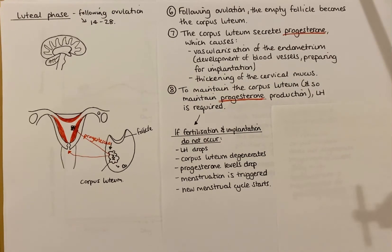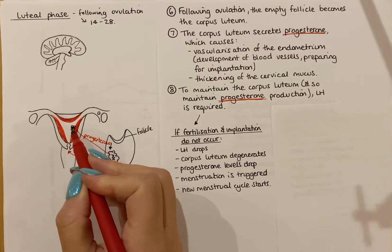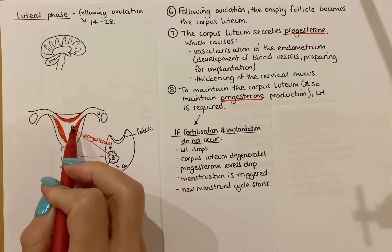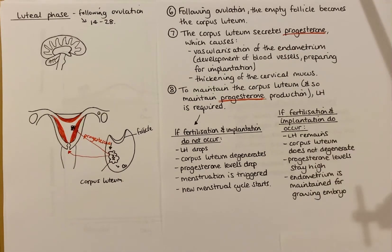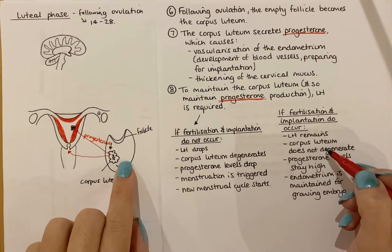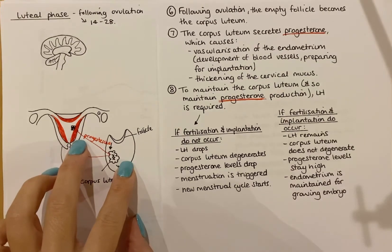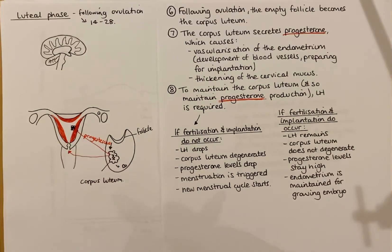If the person is pregnant and implantation does occur, the embryo will produce a hormone which maintains the pregnancy. That LH or the hormone produced by the embryo will remain in the blood, and therefore the corpus luteum stays. Because the corpus luteum stays, it produces progesterone, which maintains the endometrium lining — and therefore that person does not menstruate and does not lose the endometrium lining.